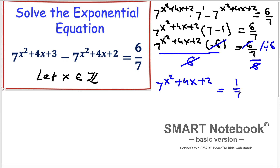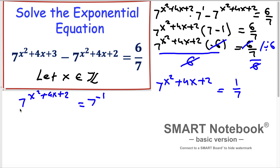According to the properties of exponents, 1 over 7 can be written as 7 to the exponent minus 1. So we have 7 to the exponent (x² + 4x + 2) equals 7 to the exponent minus 1. According to the rules of exponents, if the base is the same in an equation, then the exponents are equal. So we can write x² + 4x + 2 = −1.